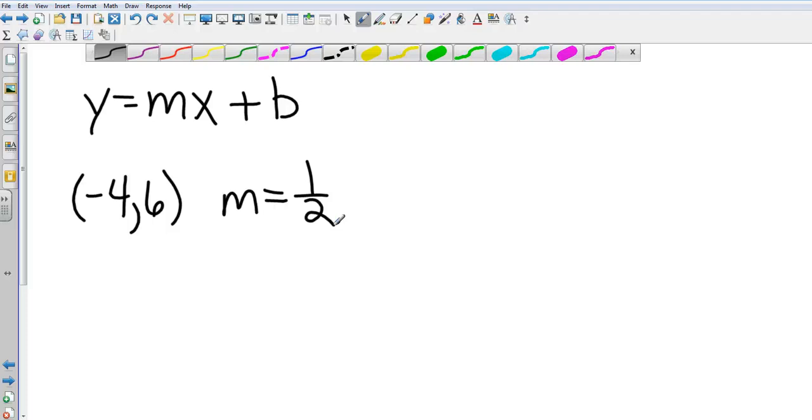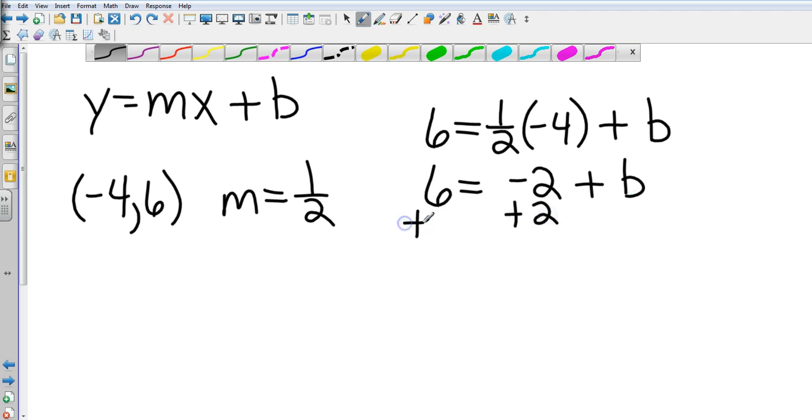Okay, we're back. Let's plug in what we have. We have a y value of 6. We have an m of 1 half. We have an x value of negative 4 plus the b we're trying to find. So that's 6 equals, what is half of negative 4? That's going to be negative 2. So we want to get b by itself. So we're going to add 2 to both sides. And so that's b equals 8. So since we have what m is and we have what b is, our equation is y equals 1 half x plus 8.